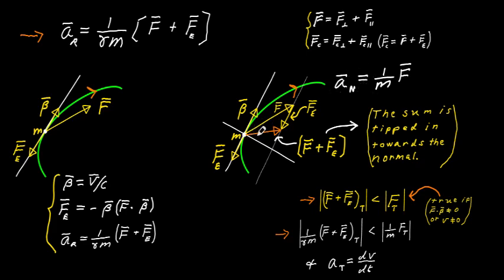One of the main differences between relativistic and classical acceleration is that relativistic acceleration is generally not along the direction of F. There are two special cases where it is. First, if F is perpendicular to beta, then F dot beta equals zero, so F_effective vanishes and a is along F. Second, if F is along the tangent line — parallel to beta — you get an F_effective back, but its magnitude is always smaller than F, so the net force and hence acceleration remain in the direction of F.